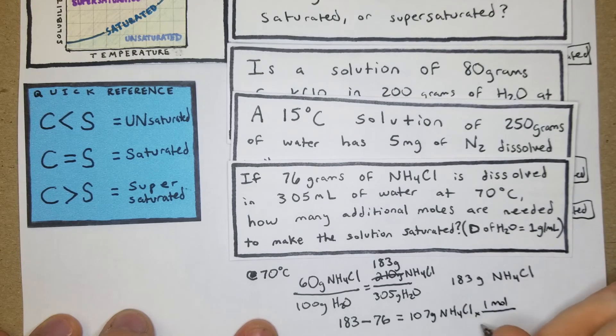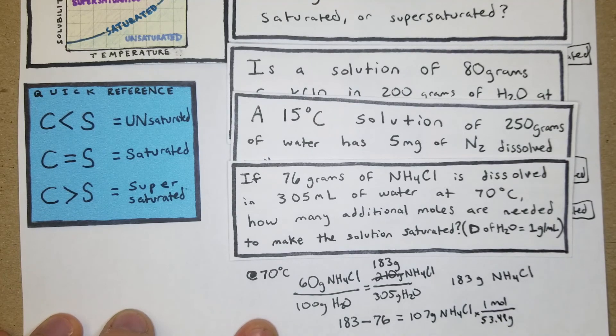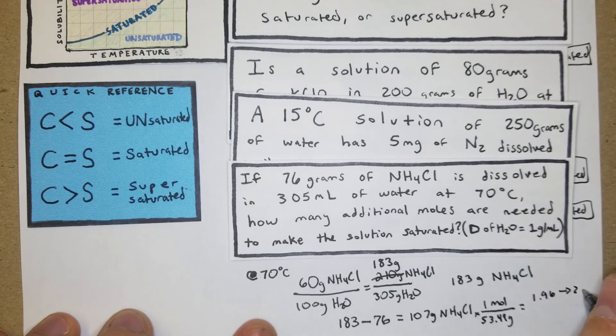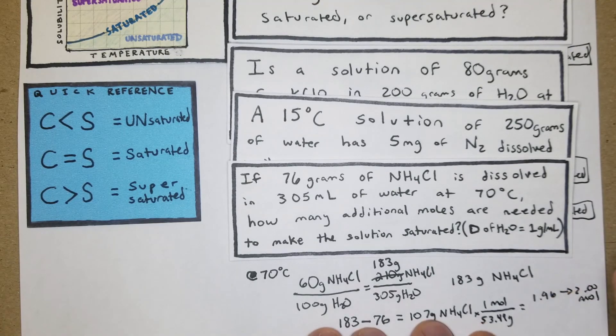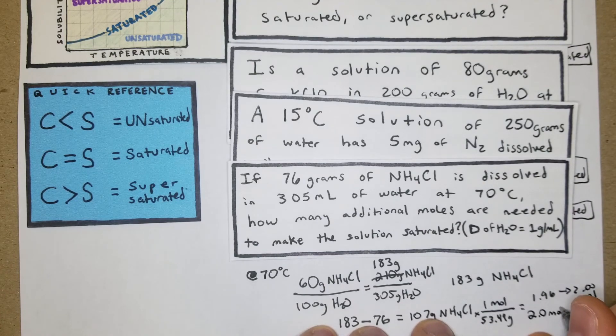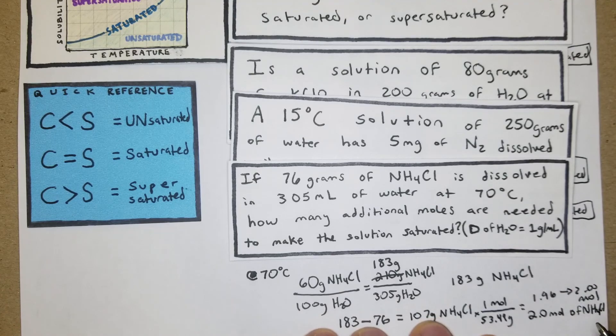We'll just put it into moles. The molar mass of that is going to be 53.49 grams, so we'll just divide it. I got 1.96, but we can round that to 2.00 mole. Our full answer is going to be 2.0 moles of NH4Cl can be added.